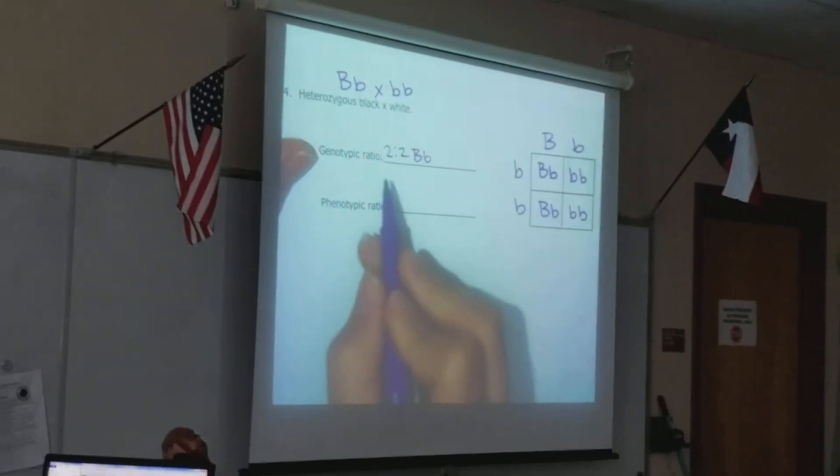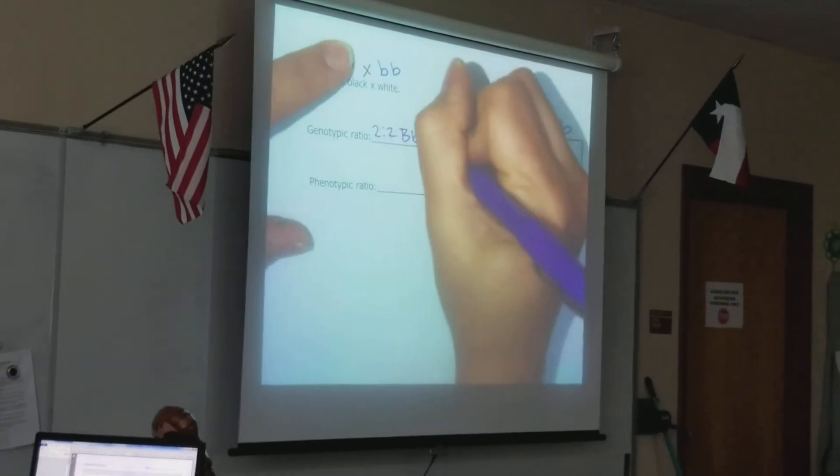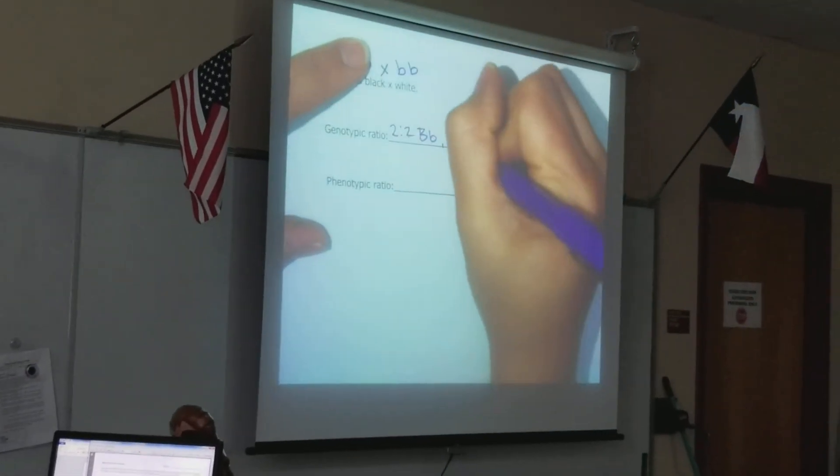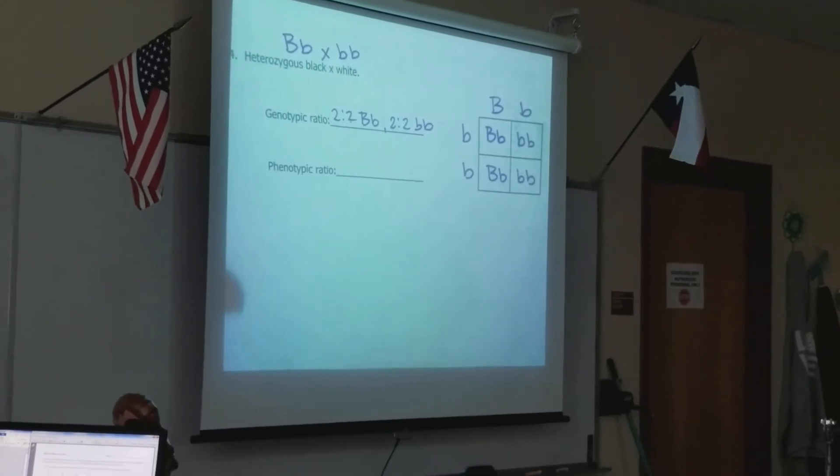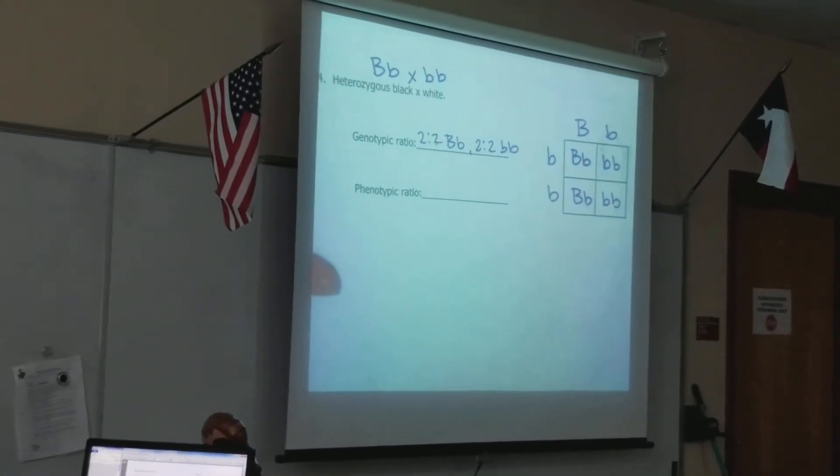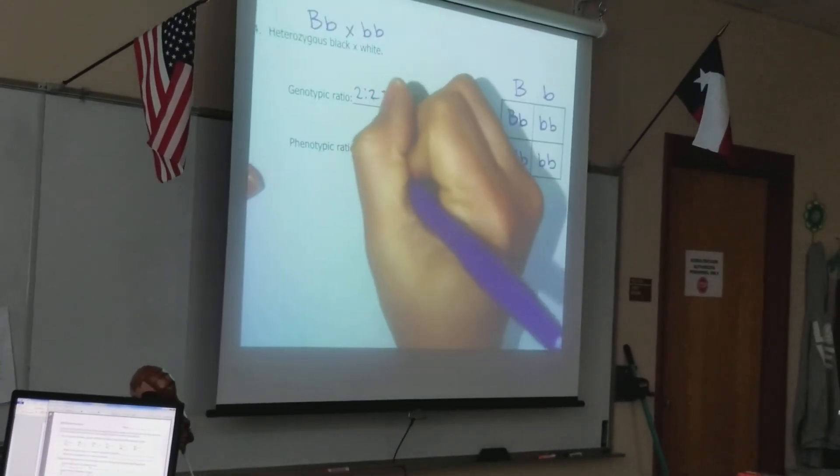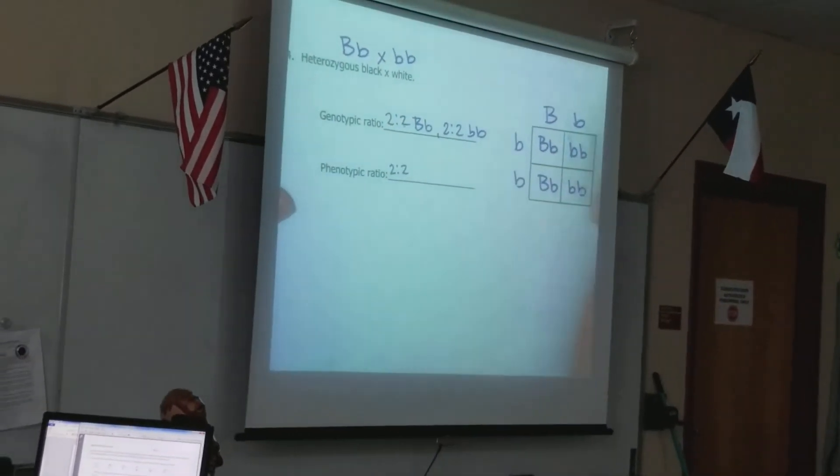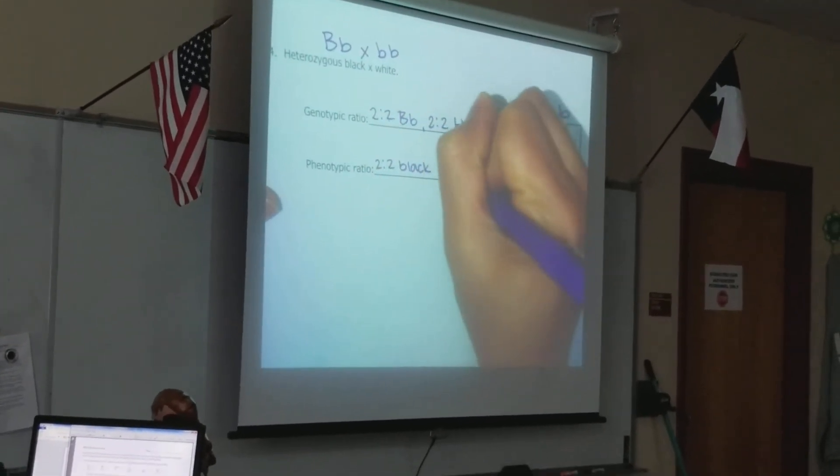So what this says is that two are heterozygous, two are not. Two are homozygous recessive, two are not. Now, my phenotypes, I'm going to have two different ones. So I'm going to have two that are what? Black, and we're going to have two that are white.